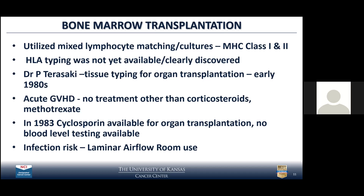Fortunately, HLA typing came about, developed especially by Dr. Paul Terasaki at UCLA. He set up a tissue-typing system for organ transplantation — mainly for kidney transplantation — which was then adapted for use in patients undergoing bone marrow transplants. In the early 1980s, we would send blood samples from the donor and patient to UCLA for HLA matching testing by Dr. Terasaki. This has come a long way from how it was even done back then.